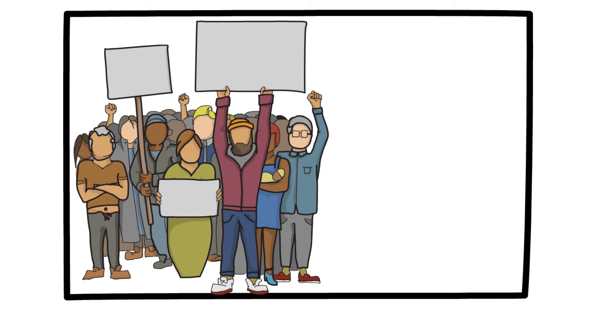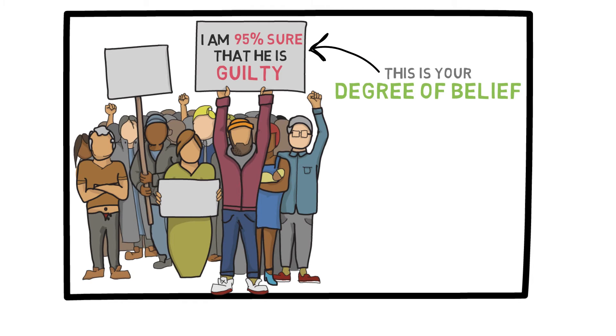Let's look at a different example. Say you are a juror in a murder trial and you want to determine the probability that the defendant is guilty based on the evidence you hear. At the end of the trial, you might say, okay, I'm 95% sure this person is guilty, right? But what does this probability actually mean? Again, you cannot interpret it in terms of relative frequency or equally likely outcomes. Rather, this is what we call your degree of belief.